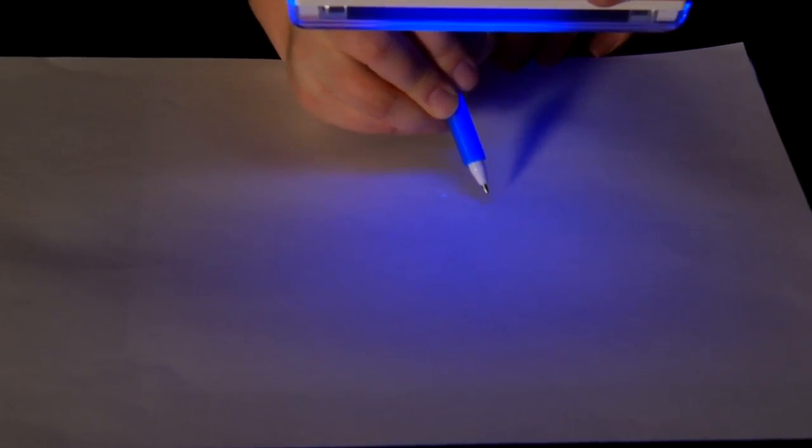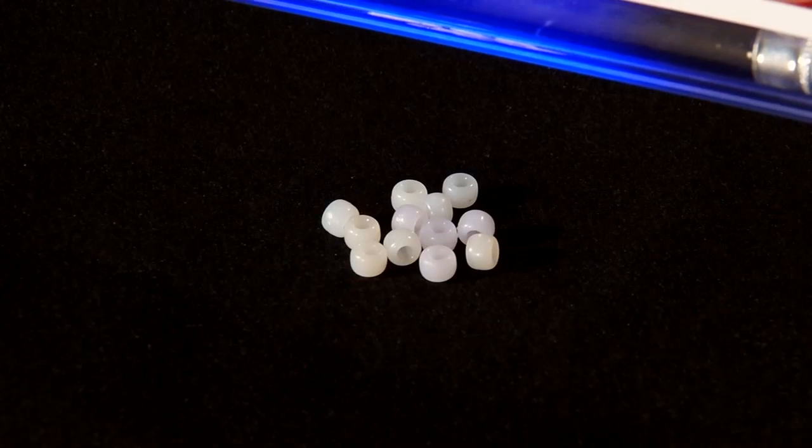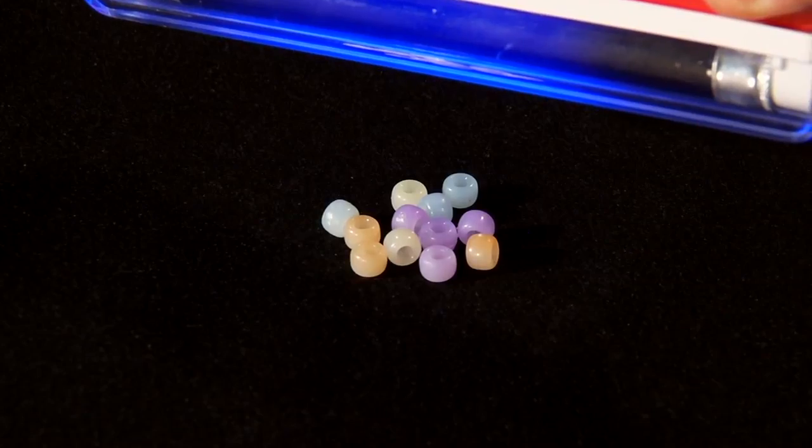The best detector for the ultraviolet portion of the light is an invisible ink pen. Anything drawn with such a pen can only be seen if ultraviolet light is present. Another detector option is UV reactive beads, which only change color when exposed to ultraviolet light.